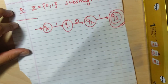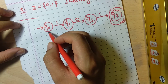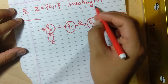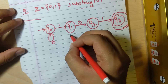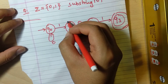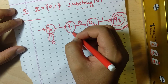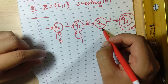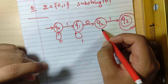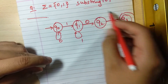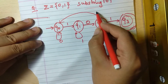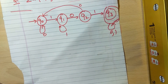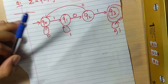Now find the other transitions. At q0, if '0' is encountered, make a self-loop — it doesn't hamper the criteria. If '1' is encountered at q2, we can't make a self-loop there because it would hamper our substring match, so send it back to q0. For q1, if '1' is encountered, send it back to q0.